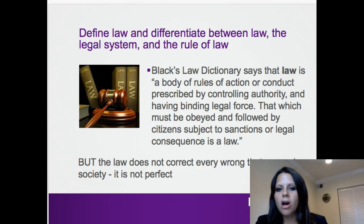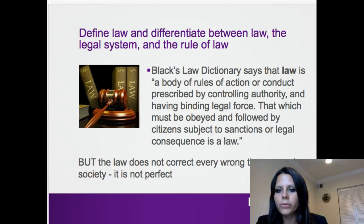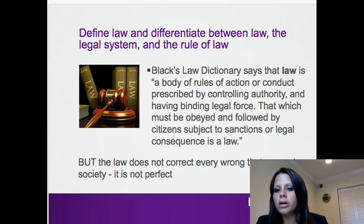So let's define law and differentiate between law, the legal system, and rule of law. Black's Law Dictionary says the law is a body of rules of action or conduct prescribed by a controlling authority and that have a binding legal force. That which must be obeyed and followed by citizens subject to sanctions or legal consequence is a law. The idea here is that the law are rules — they're bare minimums we must follow. But the laws don't correct every wrong that occurs in society. It's not perfect.